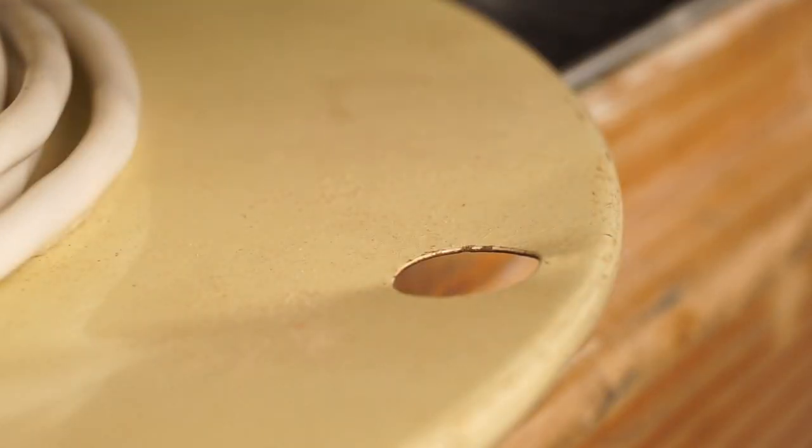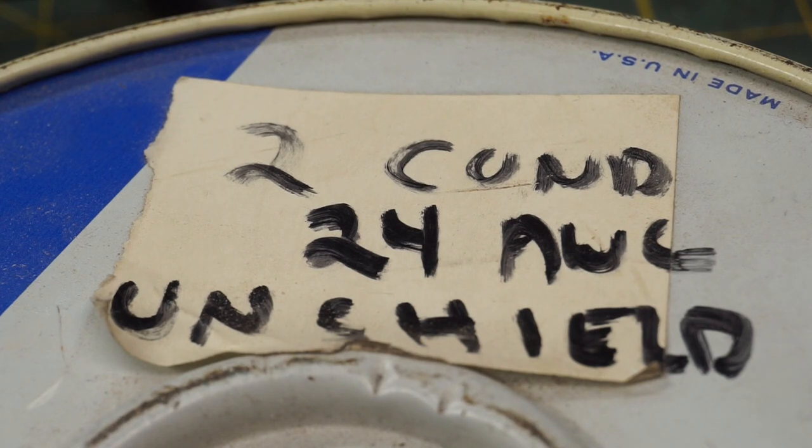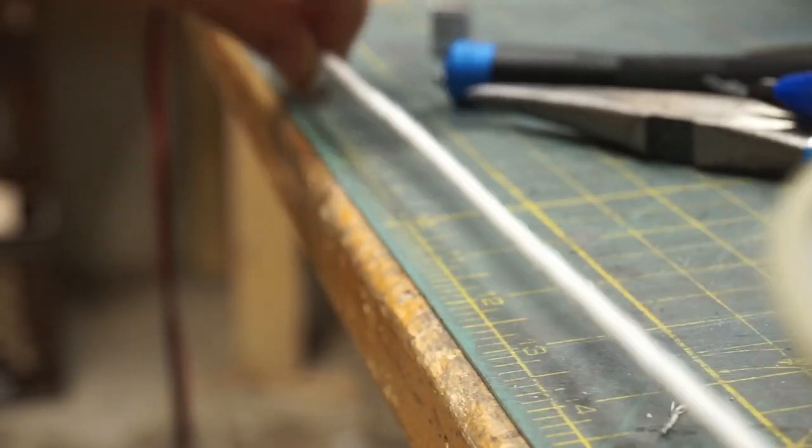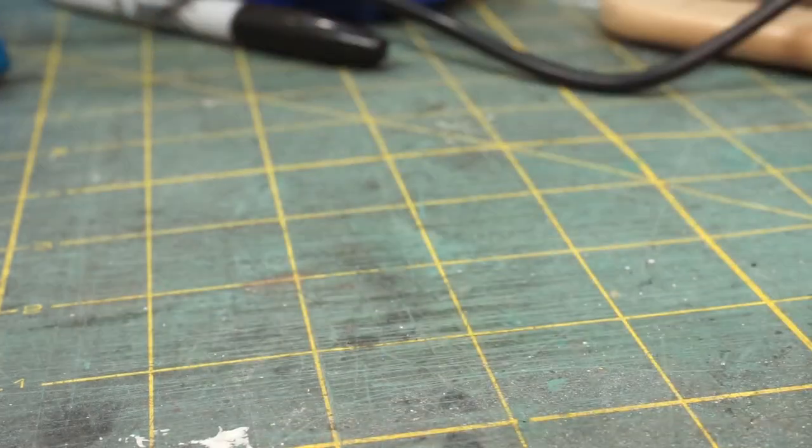A while back, I was able to buy this roll of dual conductor wire when a local electronics store went out of business. And it's perfect. The colors of the wires on the inside are even correct. I'll cut and strip a length of this wire to hook up to each electrical box.